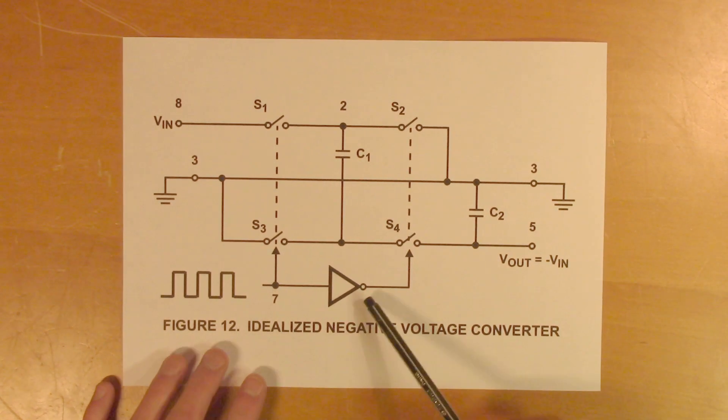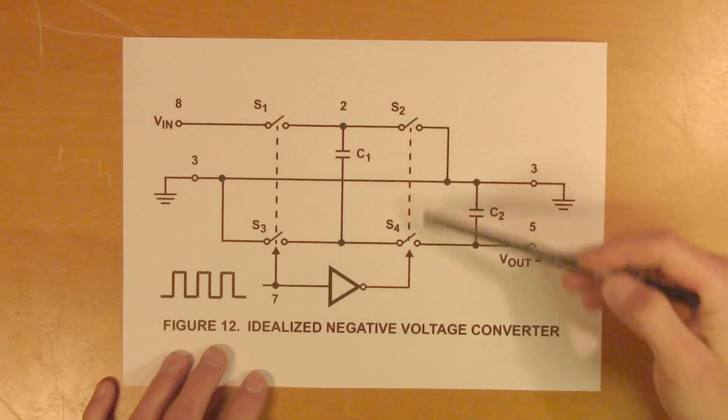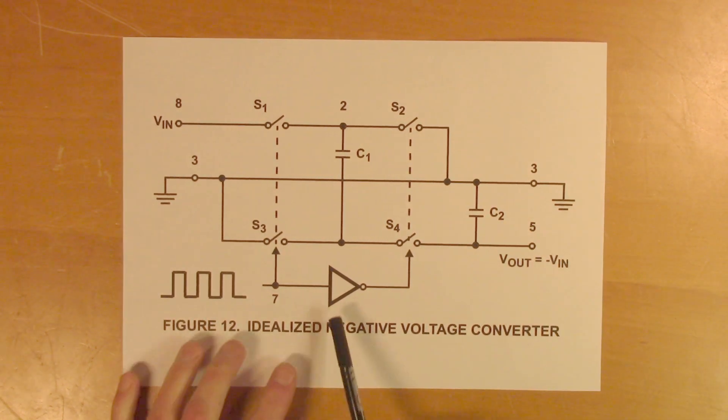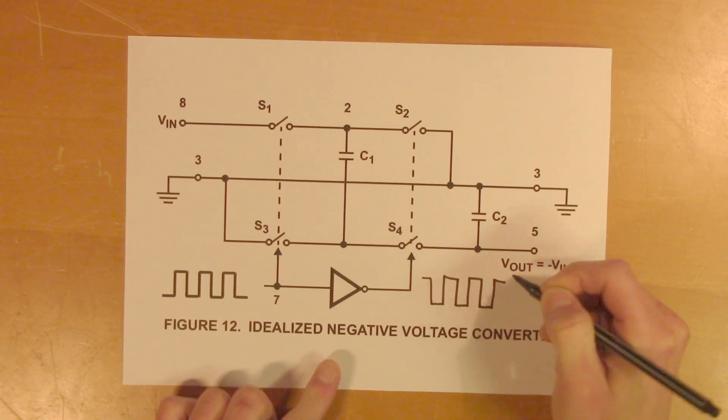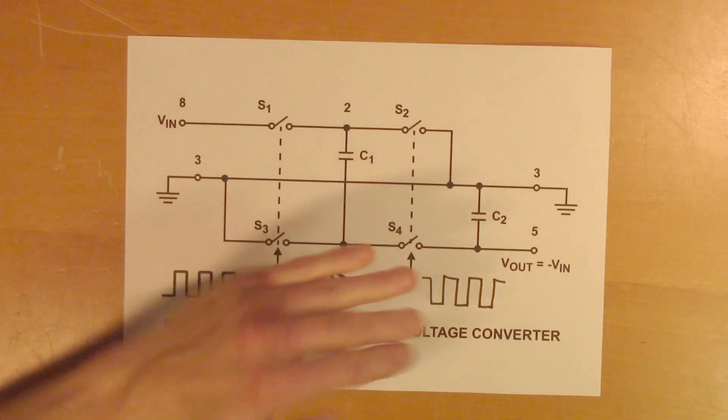And then we have an inverter, and the output of this inverter tells these two switches to close or open. So we can see that since this inverts the signal, it will look something like this instead. So this signal but inverted.